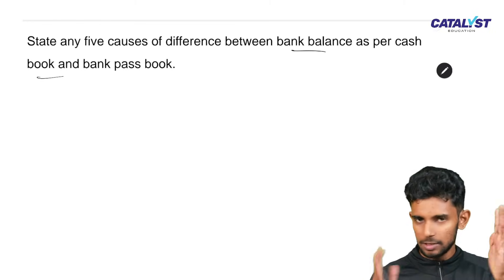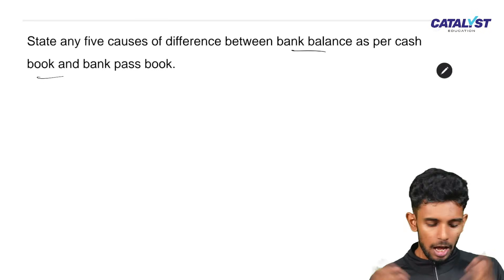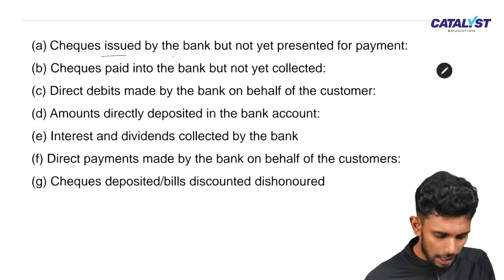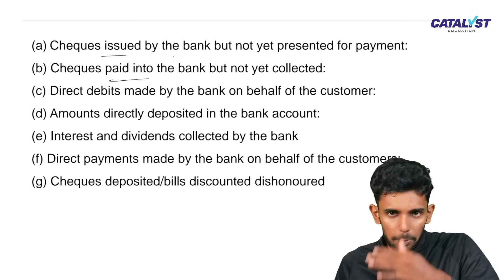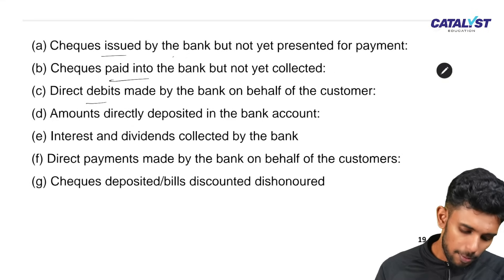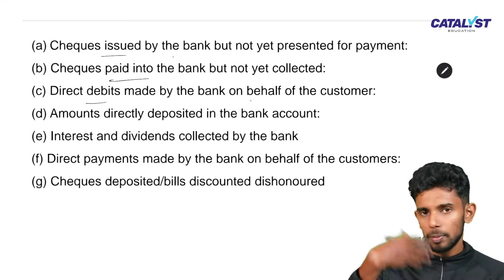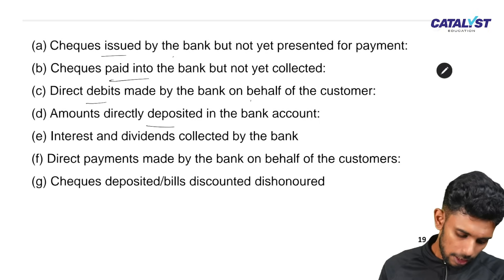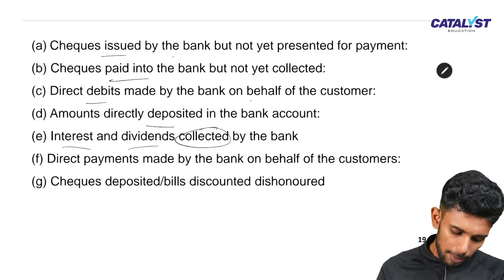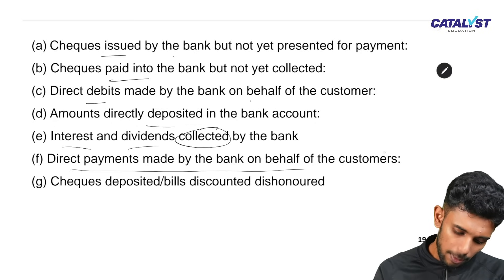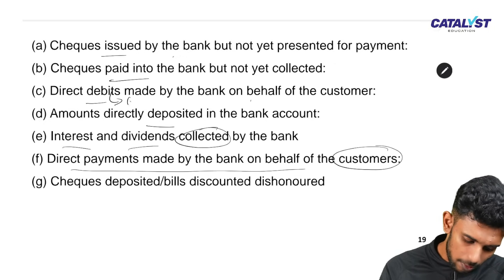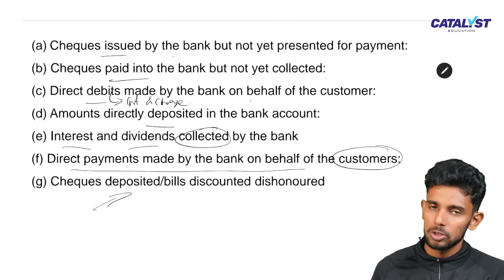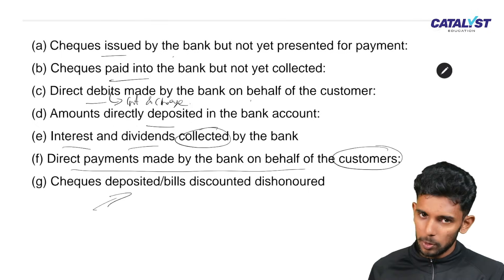Bank balance and cash book balance, and passbook balance and cash book balance, may differ for various reasons. These include: cheques issued but not yet presented to the bank, cheques paid into bank but not yet credited, direct deposits by customers, interest and bank charges credited or debited directly by the bank, and dishonoured cheques or bills discounted. This is a very important topic.